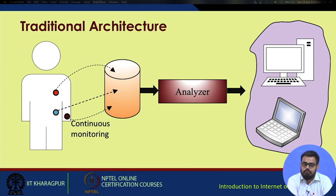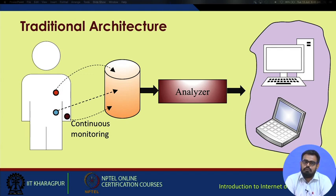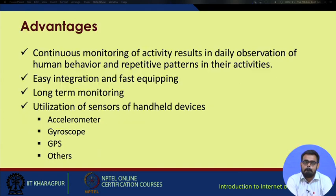For offline-based models, you can have all these things on a single wristband of minute size, doing all the processing on the device itself. There may be certain disadvantages and restricted applications, but for example if you are going jogging, an offline model where every calculation is done on the device can keep track of your heart rate and give you an analysis. Continuous monitoring of activity will result in daily observation of human behavior and repetitive patterns.